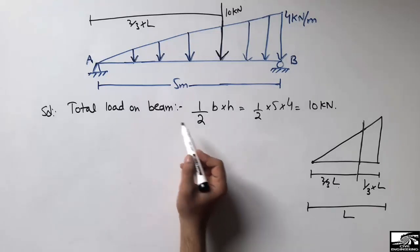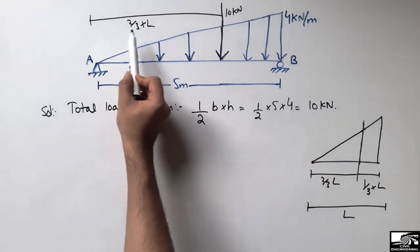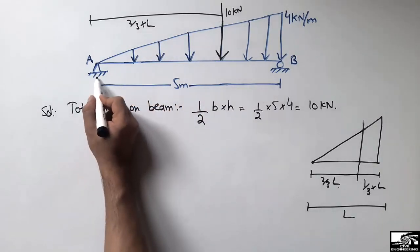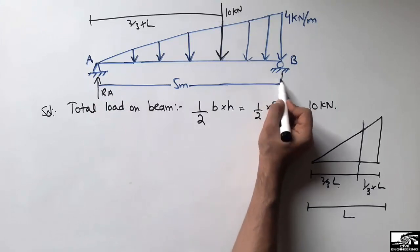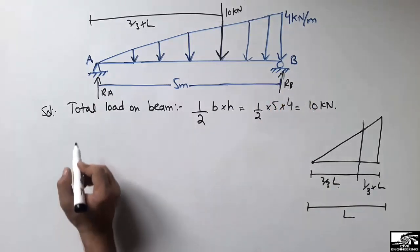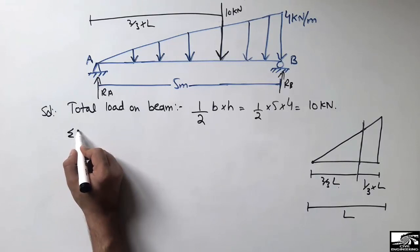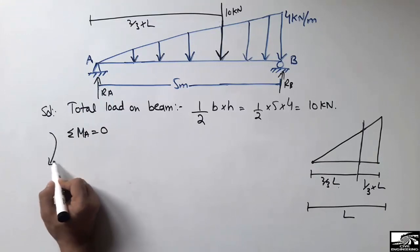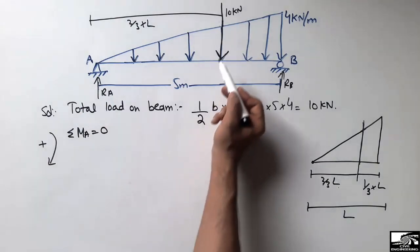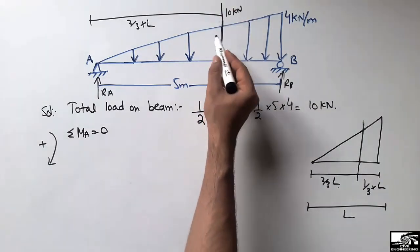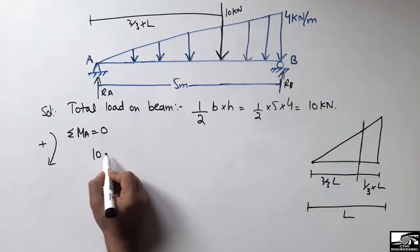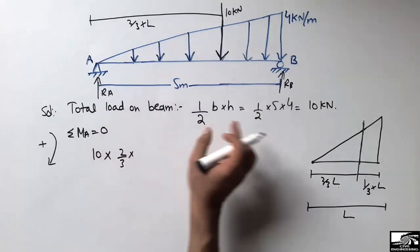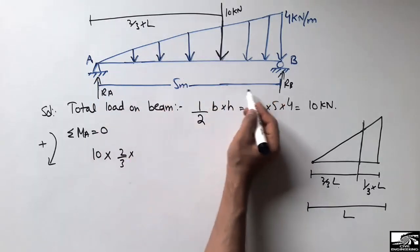After finding that the total load of 10 kN acts at 2/3 L from the left side, we can find the support reactions RA and RB. Taking the summation of moments at point A equal to zero, with clockwise direction taken as positive: the 10 kN load acts clockwise, so 10 × (2/3 × L) — where L = 5 m — minus RB × 5 = 0.